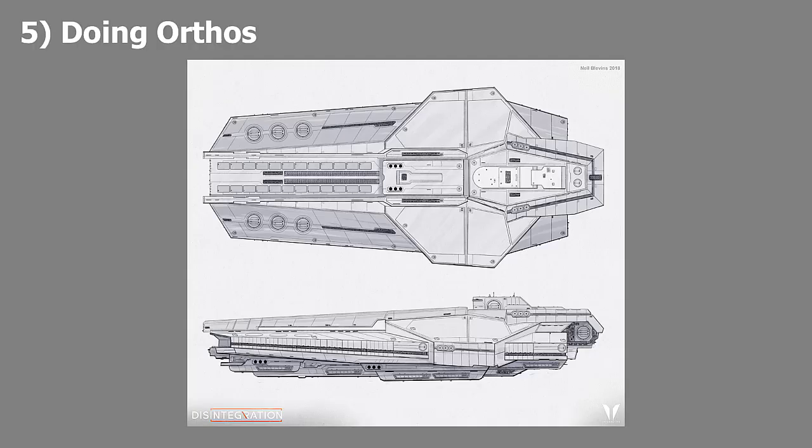Number five is doing orthos. Another task that many people don't like doing is making orthographic drawings of a finished concept. An AI might be good at taking a single concept image and producing orthographic views such as side, top, bottom, etc. of the design the artist has already made. It could compare the design you did of a front view, look through its dataset of similar designs, and guess what that object might look like from other angles.